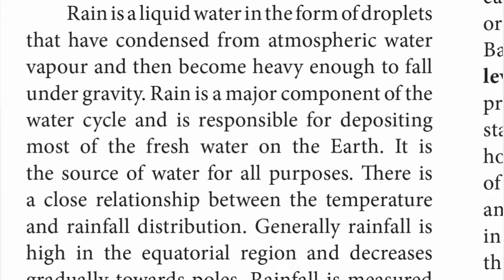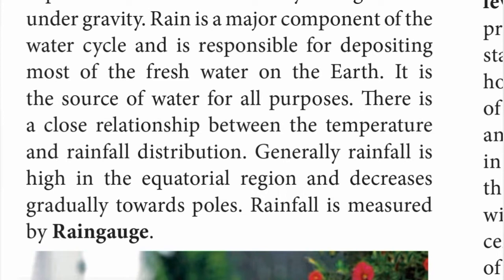Rain is a major component of the water cycle and is responsible for depositing most of the fresh water on the earth. It is the source of water for all purposes. There is a close relationship between temperature and rainfall distribution. Generally, rainfall is high in the equatorial region and decreases gradually towards the poles. Rainfall is measured by a rain gauge.